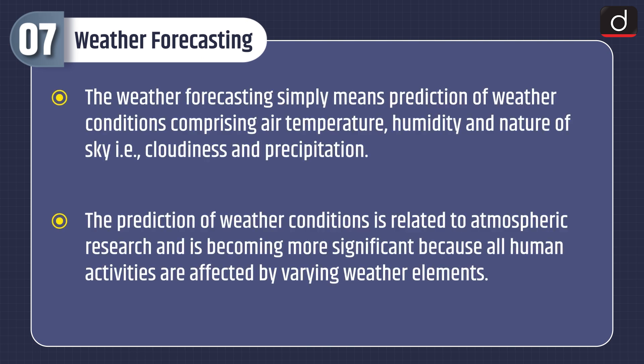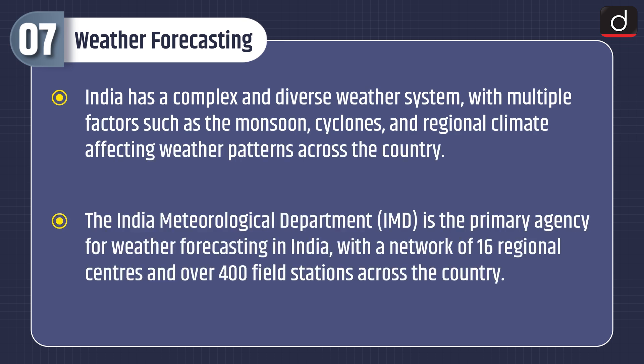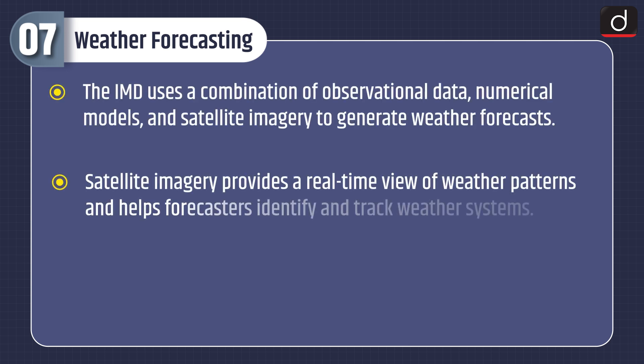Lastly, let's discuss weather forecasting. Weather forecasting means prediction of weather conditions comprising air temperature, humidity, and nature of sky — cloudiness and precipitation. The India Meteorological Department is the primary agency for weather forecasting in India, with a network of 16 regional centers and over 400 field stations. The IMD uses a combination of observational data, numerical models, and satellite imagery to generate weather forecasts; satellite imagery provides a real-time view of weather patterns and helps forecasters identify and track weather systems.